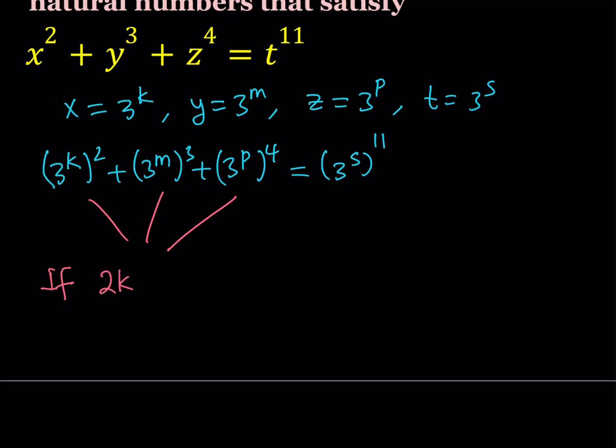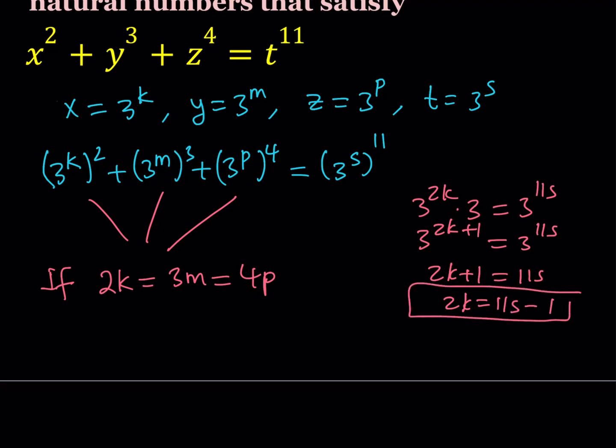That implies basically 2k equals 3m equals 4p. Now, when you consider just one of these, for example, we have 3 to the power 2k, and we're adding the same thing 3 times, so it's times 3, that should give me 3 to the power 11s, which means that 3 to the power 2k plus 1 equals 3 to the power 11s, which means that 2k plus 1 is equal to 11s. In other words, 2k can be written as 11s minus 1. What I said here is also true for 3m and 4p, since they're all equal, so I can safely say that if 2k is equal to 3m and that equals 4p, all of them are also going to equal 11s minus 1.